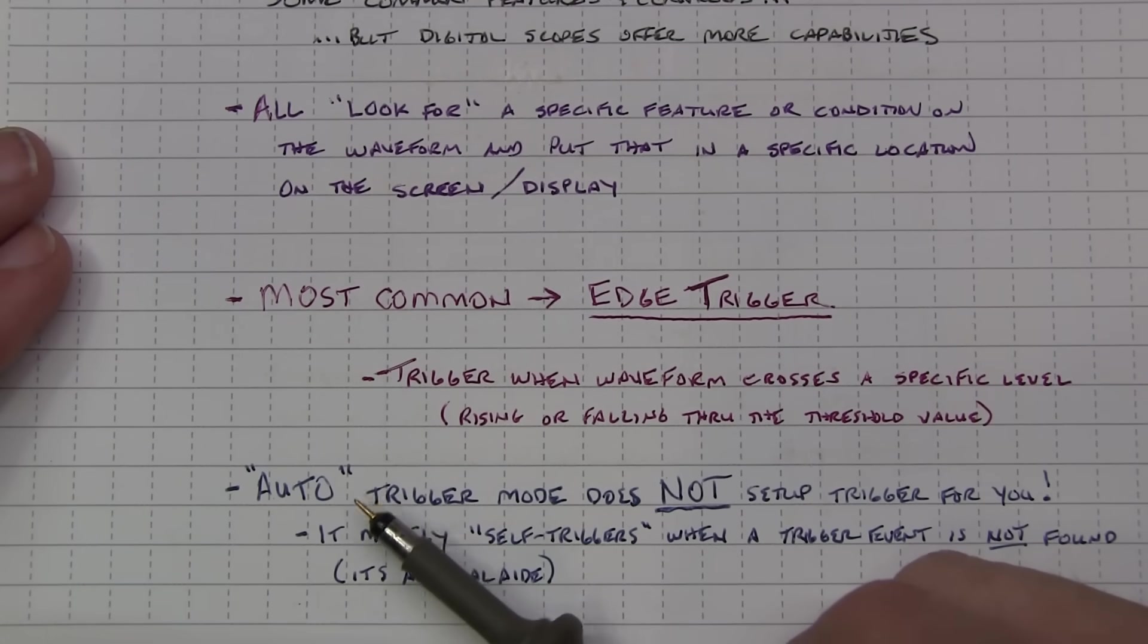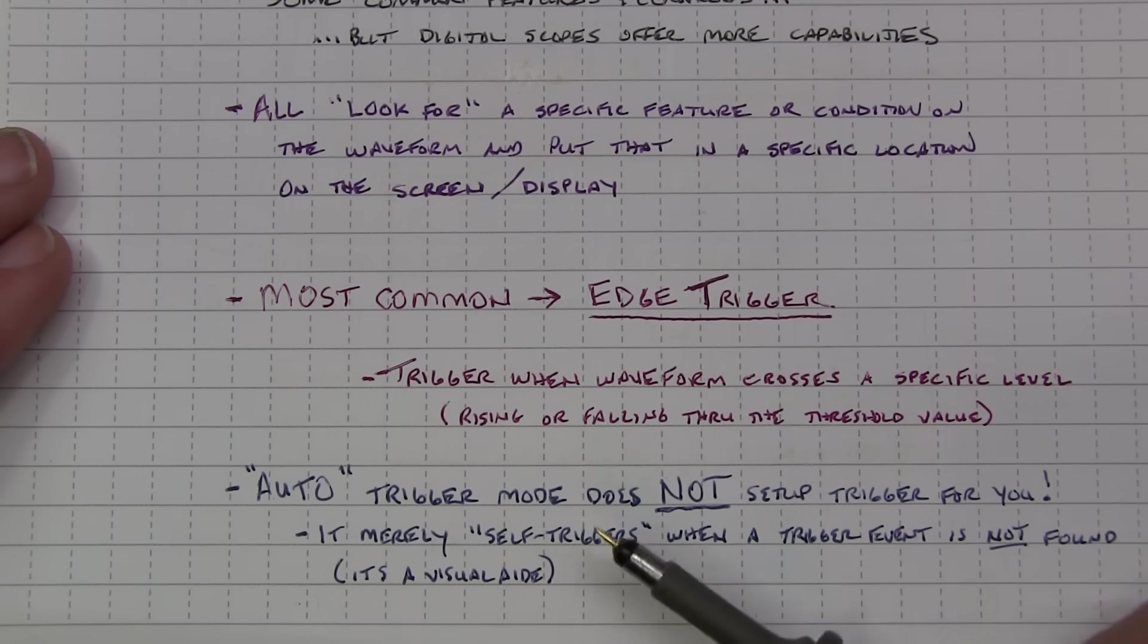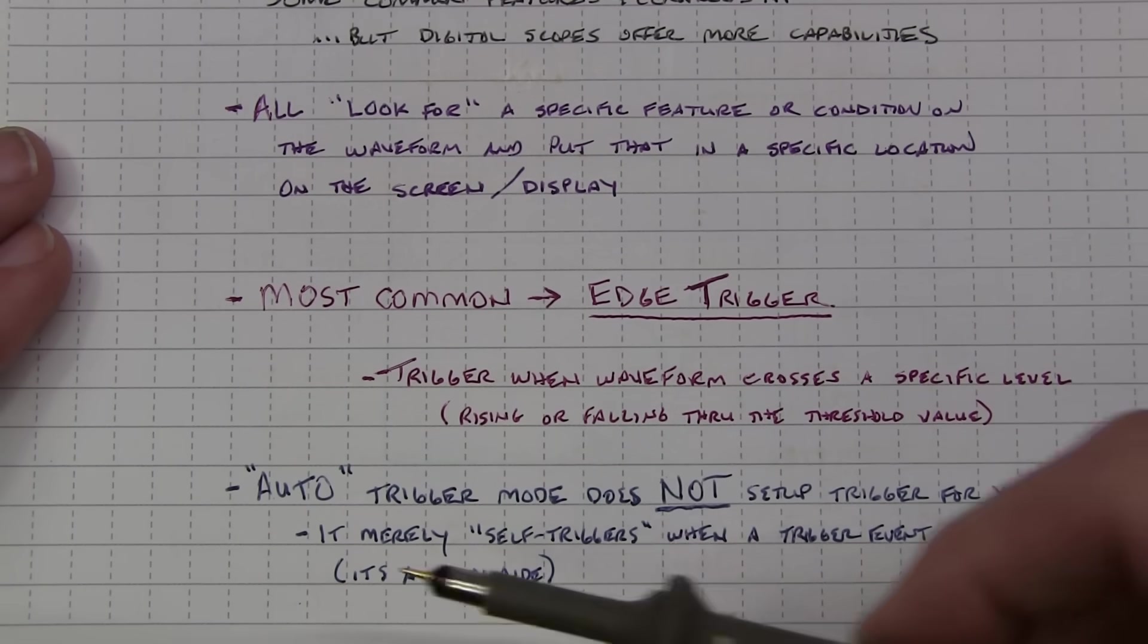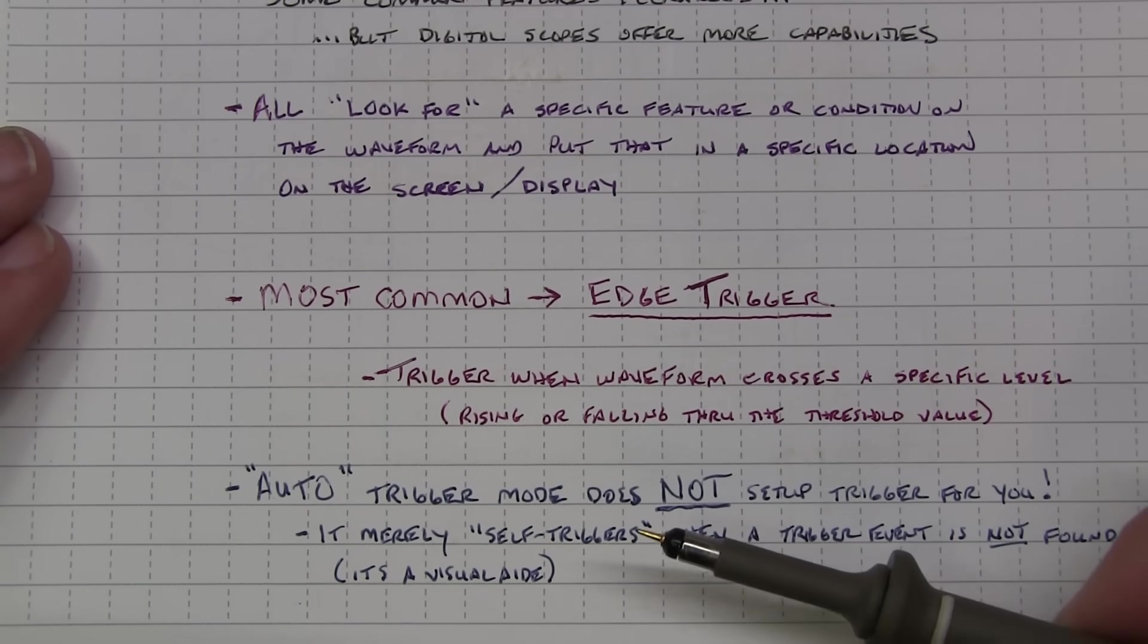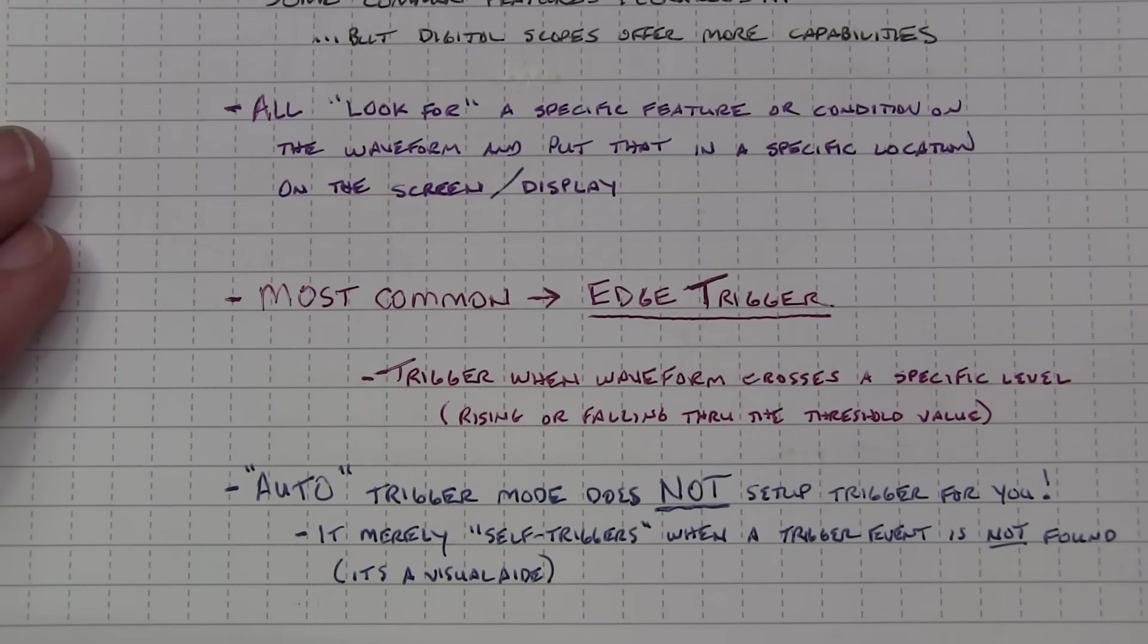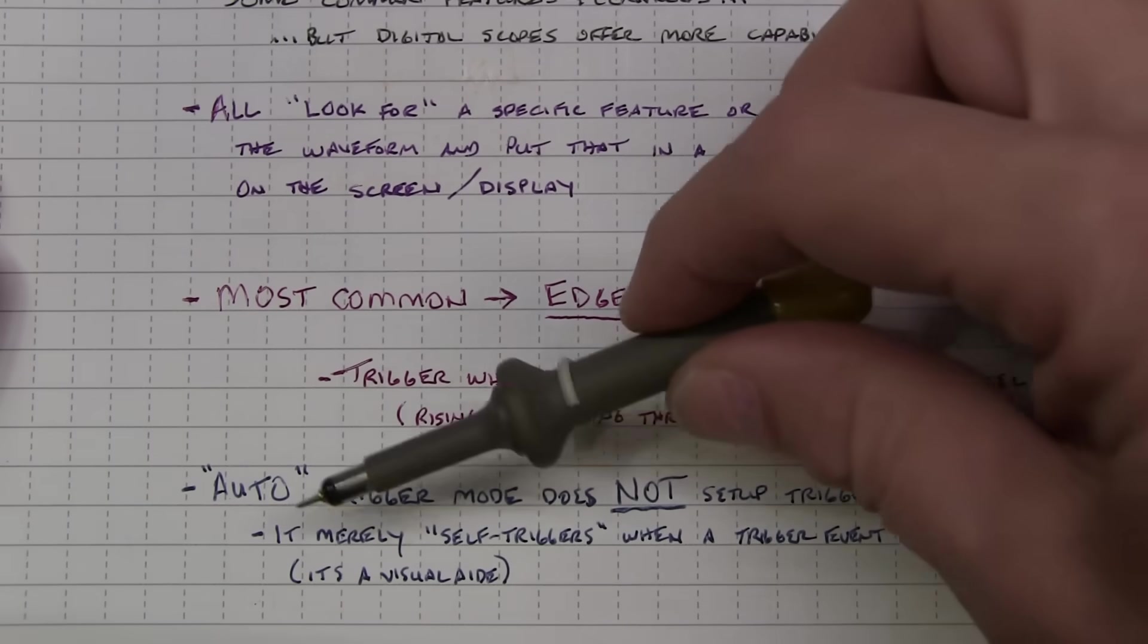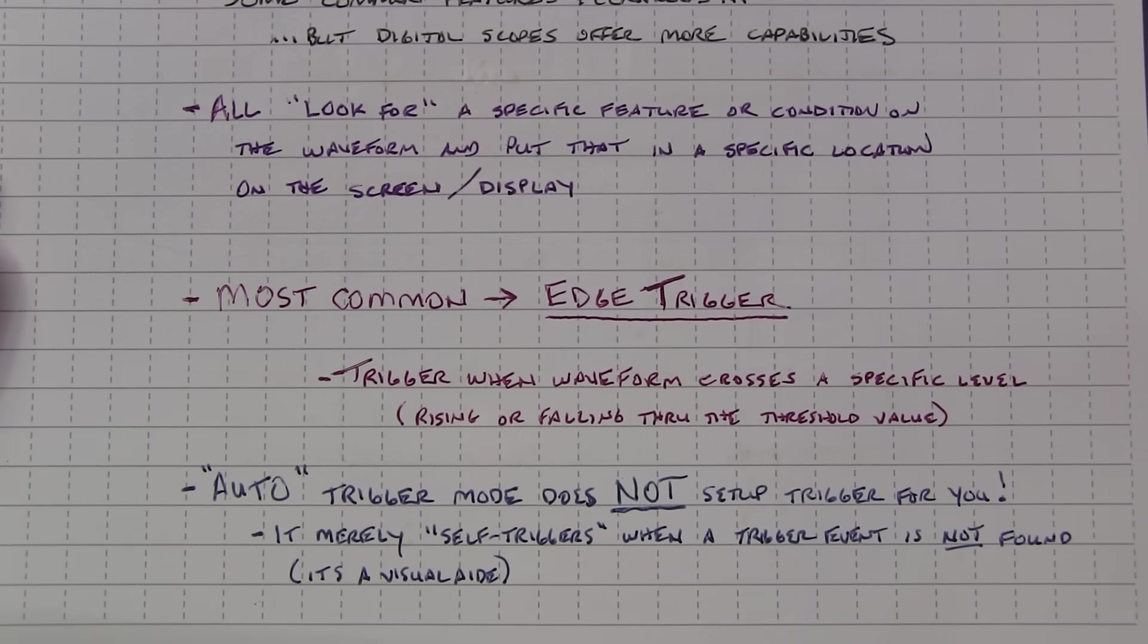So given that, auto trigger is actually a very good thing because it lets you at least get something on the screen so you can see I need to adjust my vertical scale or maybe I need to adjust my trigger level up or down. But it gives you some visual reference of something happening rather than just looking at a blank screen. And of course one of the links down below is a video that I did specifically on the auto trigger mode.